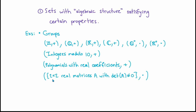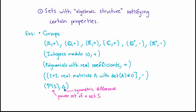Another example of a group is the collection of 2×2 real matrices — matrices with real coefficients — with determinant not equal to 0, together with the binary operation of multiplication of matrices. And to give a final example which may be less familiar: take any set S and consider the power set of that set, that is the collection of all subsets of S, together with the binary operation of symmetric difference. Our set is the power set of S, and the binary operation takes two subsets and forms their symmetric difference. This also turns out to be an example of a group.